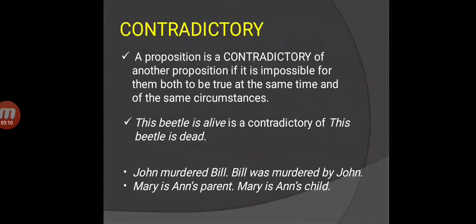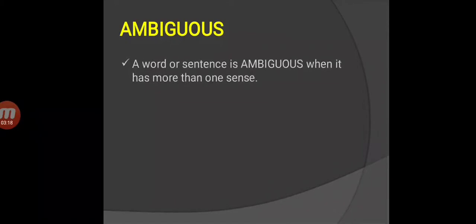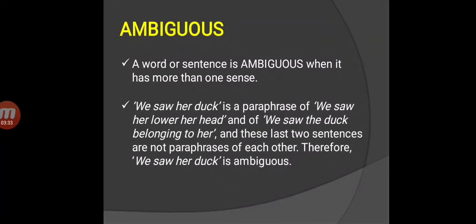Next is ambiguity. A word or sentence is ambiguous when it has more than one sense. A sentence is ambiguous if it has two or more paraphrases which are not themselves paraphrases of each other. For example, we saw her duck is a paraphrase of we saw her lower her head and of we saw the duck belonging to her, and these last two sentences are not paraphrases of each other. Therefore, we saw her duck is ambiguous.